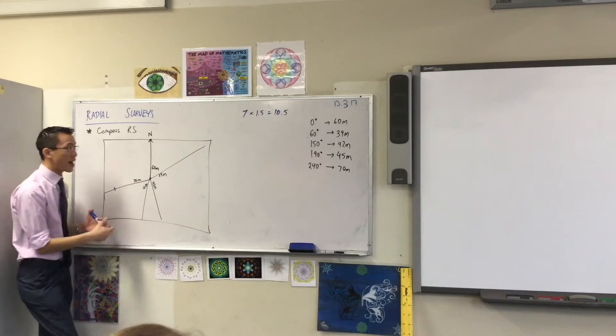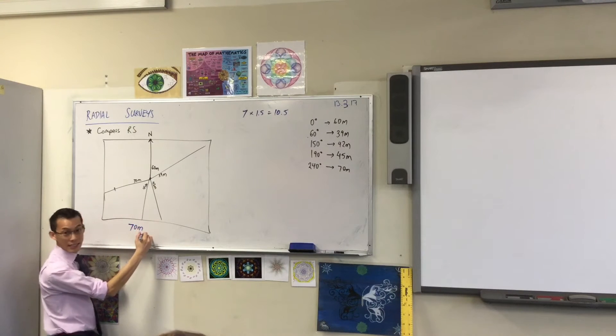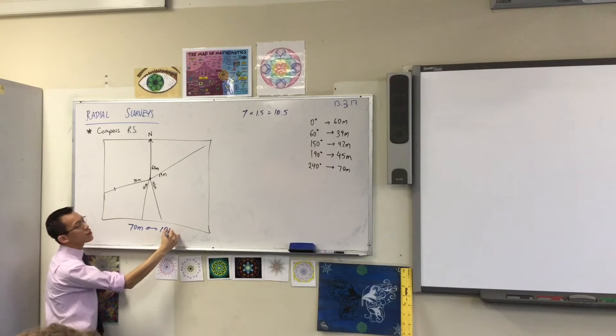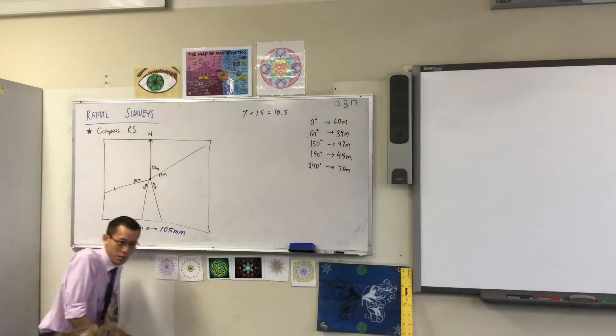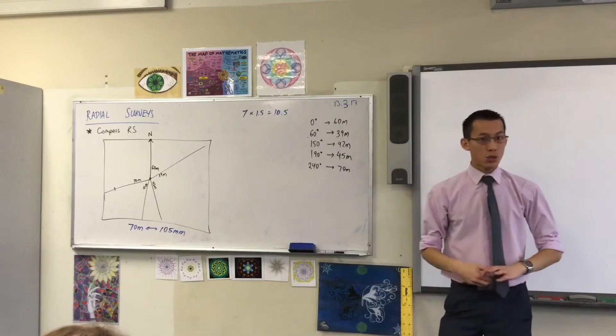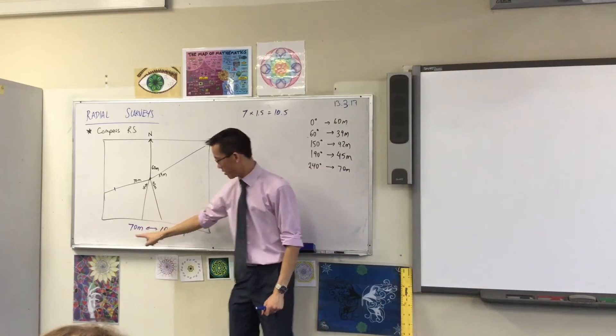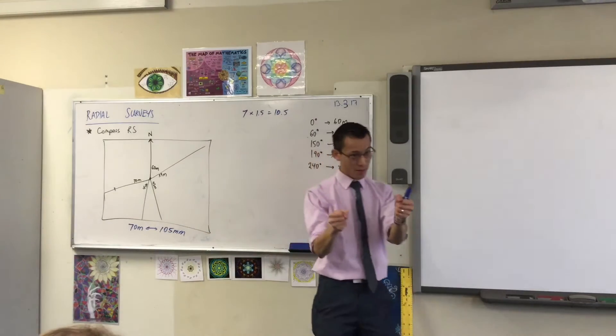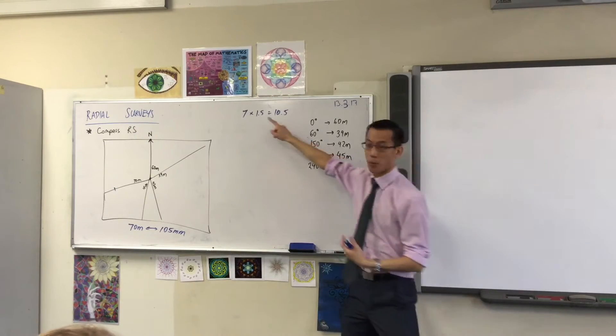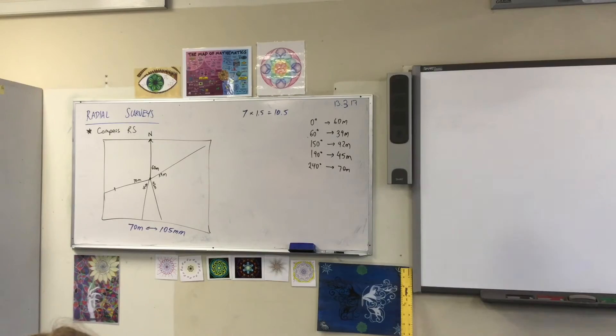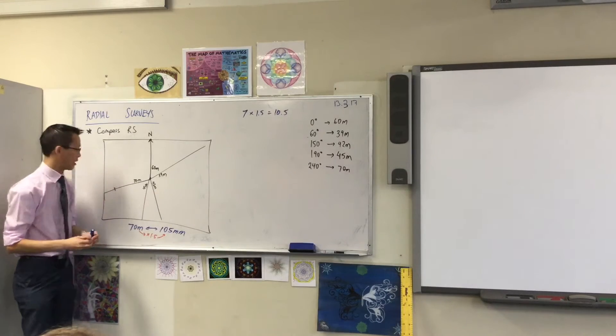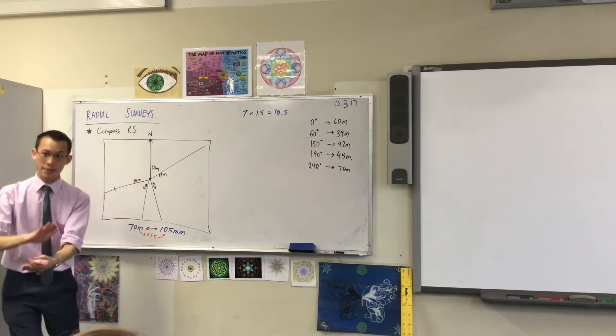On the bottom here, what I'm going to write is 70 meters in reality becomes 105 millimeters. I'll stick with millimeters because that keeps everything whole numbers rather than decimal points. Can you see what do I do to transform this number into this number? I change the units, meters into millimeters, and then I also multiply by 1.5. So I'm going to use that for all of them. Multiply by 1.5 to go that way.